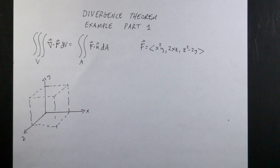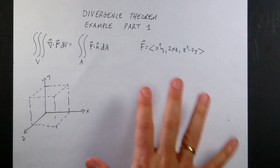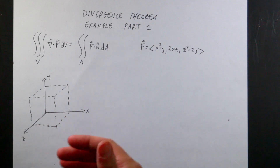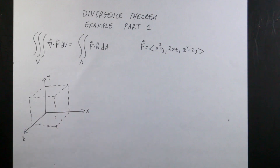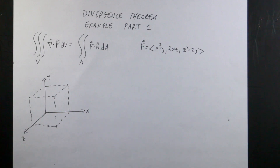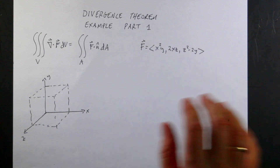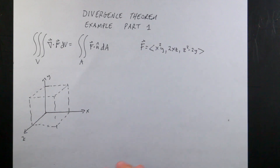Divergence Theorem Example, part one. I'm going to actually do this twice. The first time I have a vector field F that I made up, and a region of space which I also made up — but it's pretty easy to pick. I want to show that both sides of the divergence theorem are equivalent in this example. I'm not going to derive it, just use it — and I think using a theorem helps you understand what's going on. This is part one: I'll do it analytically on paper, and then numerically in Python in part two.